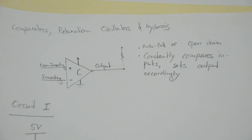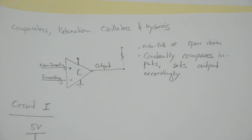Hello again and welcome to this video on comparators, relaxation oscillators and hysteresis. The context of the video is that I was asked to evaluate various circuits to blink an LED in terms of price, size and most importantly power consumption. One of these circuits is a particularly neat one — certainly not novel, but quite cool. In the remainder of the video I will briefly introduce comparators, discuss the circuit itself, show some details on the scope, and finally discuss the timing calculations for this circuit.